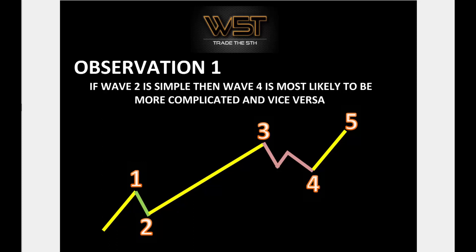On this chart, the wave two pullback has been simple, and the fourth wave is complex — it initially pulled down, pulled back up a little, failed on a small wave five, then came back down and made a new lower wave four. That's called a complex wave four. It also works the other way: if you get a complex wave two, you usually get a simple wave four. Just one observation to keep in mind.